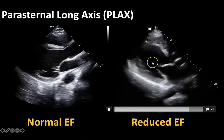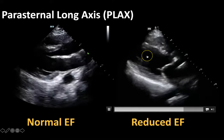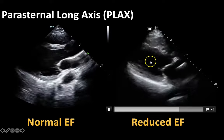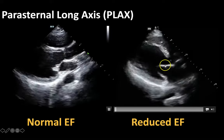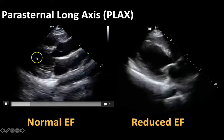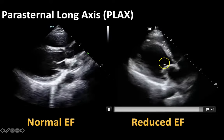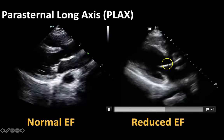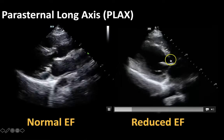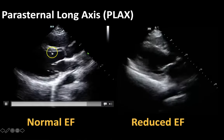You can see how the walls of this ventricle are not coming anywhere close to that imaginary line in the middle, like it is on the heart on the left side of the screen. You can also appreciate that the anterior leaflet of this mitral valve really is not coming anywhere near the septum either, compared to the healthy one that's coming close to the septum over here.